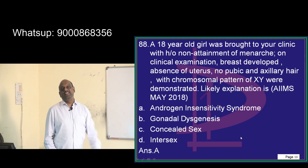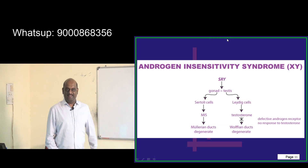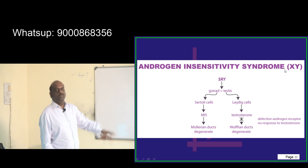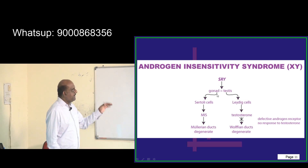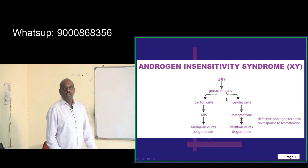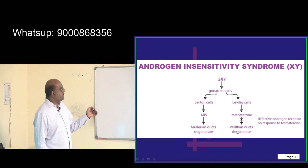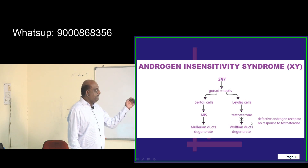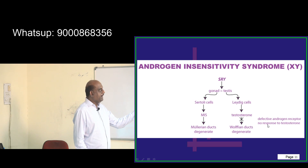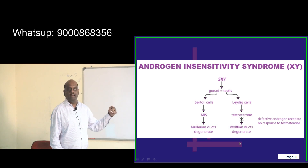On the Y chromosome there is a gene called SRY, which enables the gonad to become a testis. The testis has Leydig cells and Sertoli cells. Sertoli cells produce Müllerian inhibiting substance, which causes the Müllerian ducts to degenerate. Leydig cells produce testosterone, which prevents the Müllerian ducts from persisting.